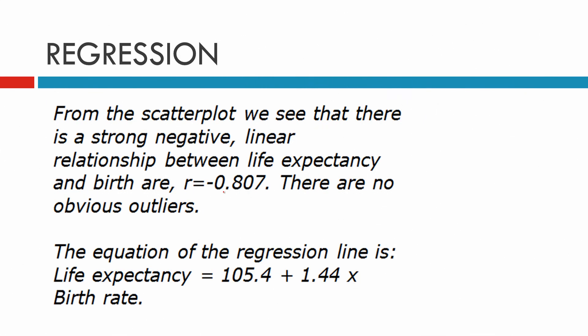From the scatter plot, we can see that there is a strong negative linear relationship between life expectancy and birth rate, and r equals negative 0.807. There's no obvious outliers. The equation of the regression line is life expectancy equals 105.4 minus 1.44 times the birth rate.